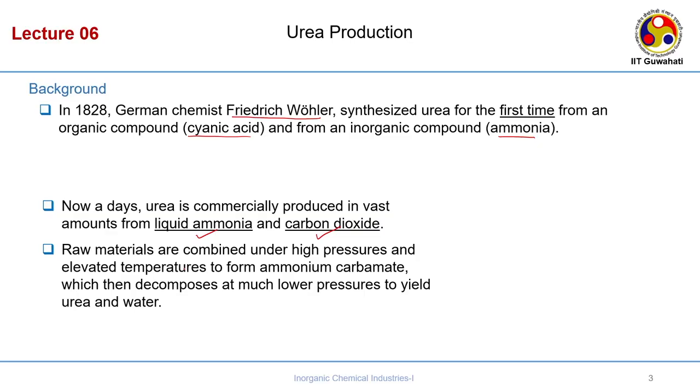If you want to store ammonia at atmospheric pressure, you must go to minus 7 degrees Celsius. Liquid ammonia serves two purposes: as a fuel and for the manufacture of urea. The raw materials — liquid ammonia and carbon dioxide — cannot combine at normal conditions; they must be combined at very high pressure and temperature to form ammonium carbamate as an intermediate. There are two steps: first, combine ammonia and CO₂ to form ammonium carbamate; second, decompose ammonium carbamate to urea and water.